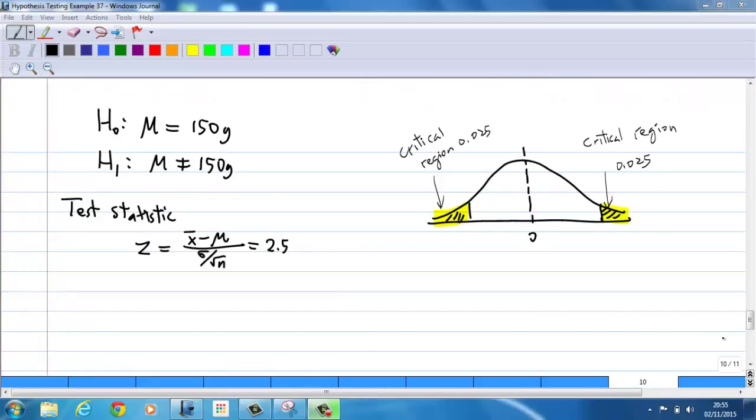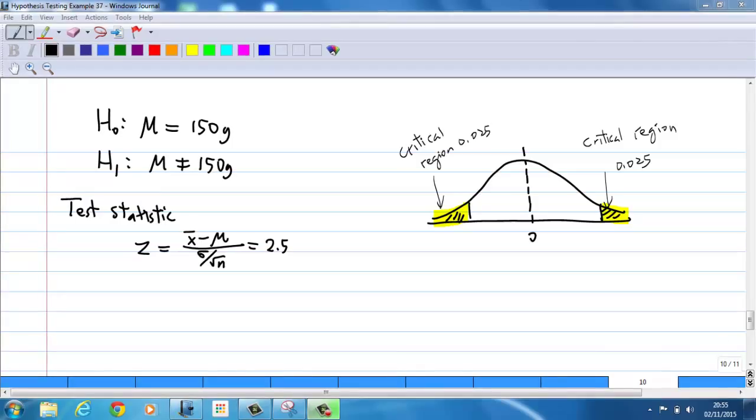We can also get the same conclusion without using the statistical table I just used. We can use the calculator. After we obtain the test statistic z equal to 2.5, you can ask yourself, what is the probability of z greater than 2.5? Remember, this is called the p-value.